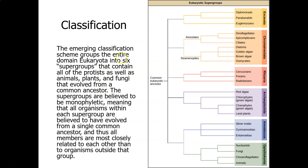These are our six supergroups of the domain Eukarya. They contain protists, and they also contain animals, fungi, and plants. We'll start with the supergroup that also contains land plants. The land plants are listed here. The protists in this group are the red algae, the chlorophytes, and the charophytes — two different types of green algae. The charophytes are the most closely related to land plants, and land plants are actually in the group Archaeaplastida, along with the red algae and the green algae.